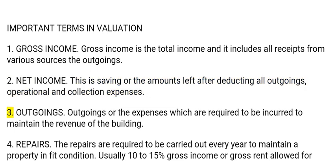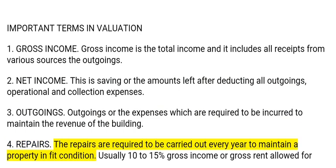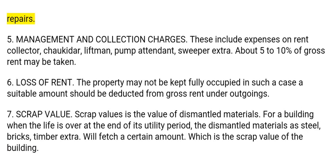3. Outgoings: Outgoings are the expenses which are required to be incurred to maintain the revenue of the building. 4. Repairs: The repairs are required to be carried out every year to maintain a property in fit condition. Usually 10–15% of gross income or gross rent is allowed for repairs.